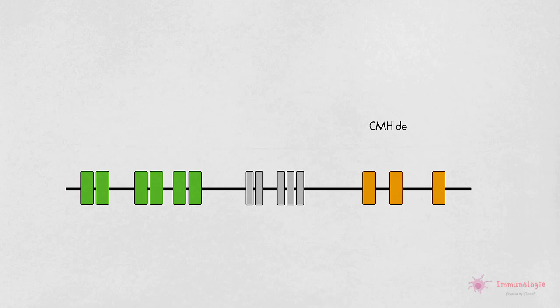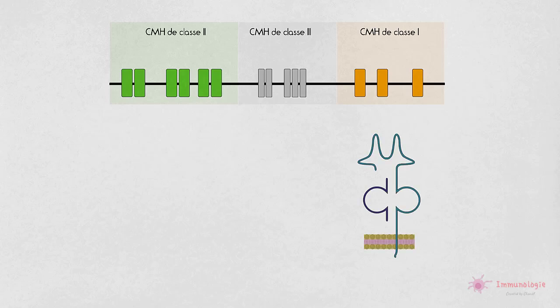Dans les deux cas, les gènes du CMH sont organisés en régions codantes pour trois classes de molécules. Les gènes du CMH de classe 1 codent pour des glycoprotéines exprimées à la surface de presque toutes les cellules nucléaires. La fonction principale de ces produits est la présentation d'antigènes peptidiques endogènes au lymphocyte T CD8.